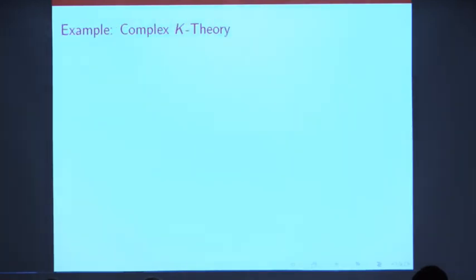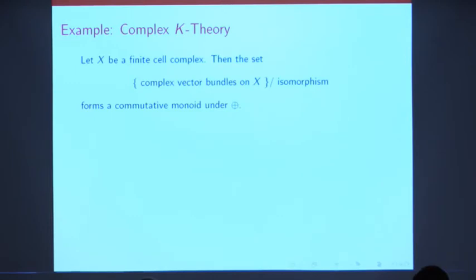So the motivating example for this generalized notion of cohomology is complex K-theory. So let me remind you, if you have a finite cell complex X, you can look at complex vector bundles on X up to isomorphism. The set of isomorphism classes forms a commutative monoid. You can add complex vector bundles via the direct sum. Now that's not an abelian group because you don't have inverses. But any time you have a commutative monoid, you can make an abelian group just by formally adding additive inverses. And in this case, the abelian group that you get is called the complex K-theory of X, denoted by K^0 of X.